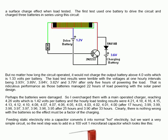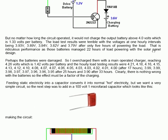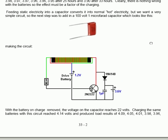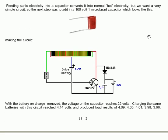Feeding static electricity into a capacitor converts it into normal hot electricity. But we want a very simple circuit, so the next step was to add in a 100 volt 1 microfarad capacitor, which looks like this.